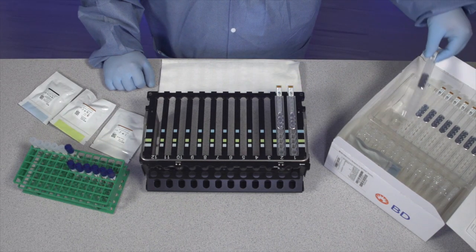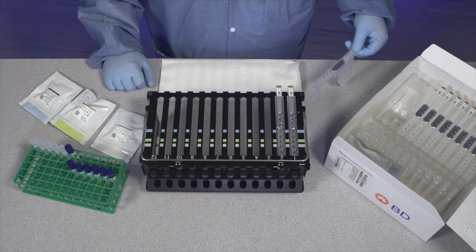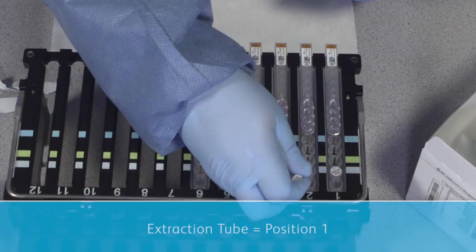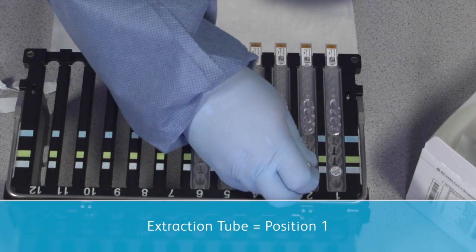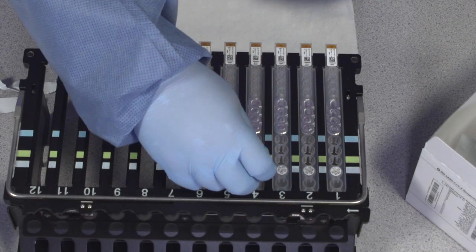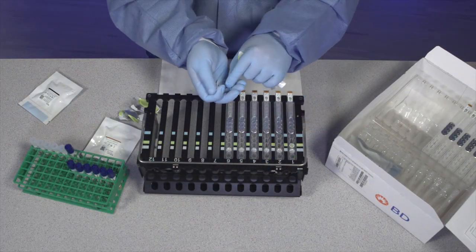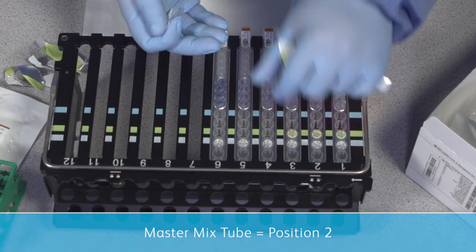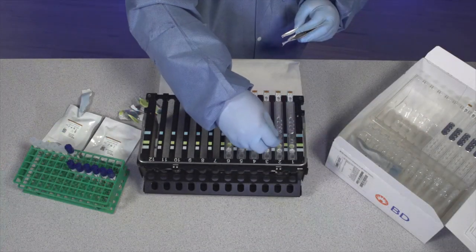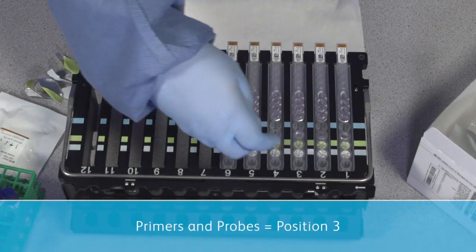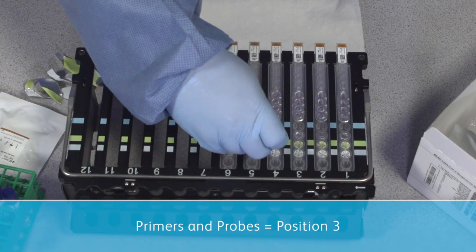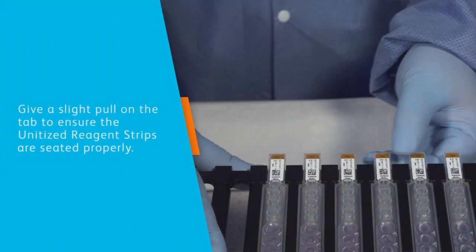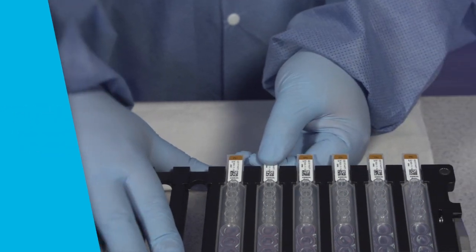For each specimen to be tested, place one unitized reagent strip on the BD-Max system rack. Assemble the strip by snapping the BD-Max EXK TNA-3 extraction tube into position one. Snap the BD-Max TNA-MMK master mix tube into position two. Snap the BD-SARS CoV-2 reagents for BD-Max system primers and probes into position three. Leave position four empty. As a tip, give a slight pull on the tab to ensure the unitized reagent strips are seated properly.